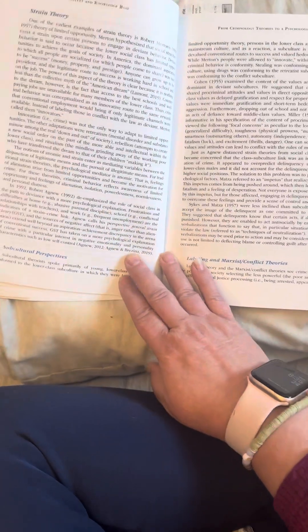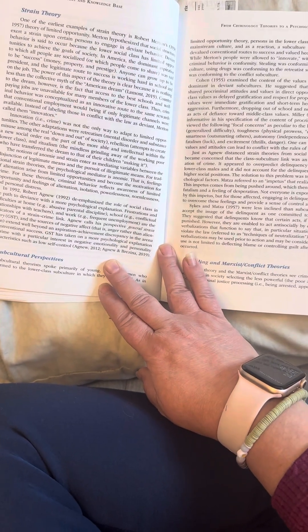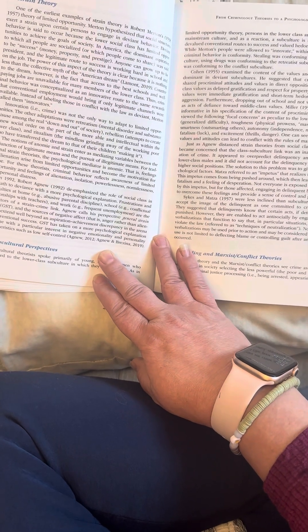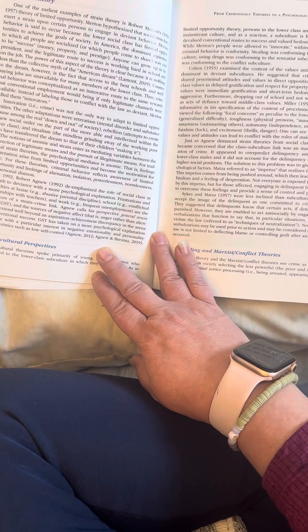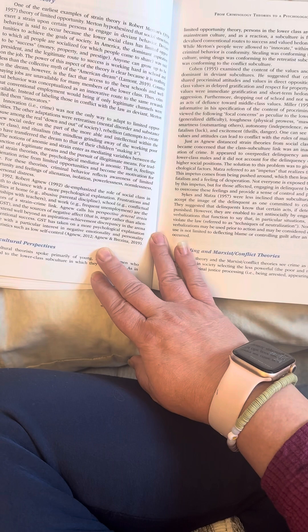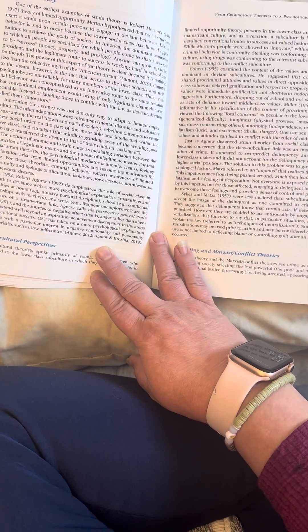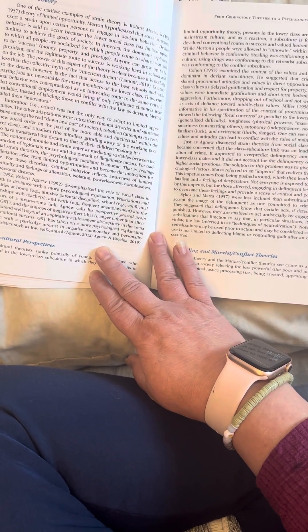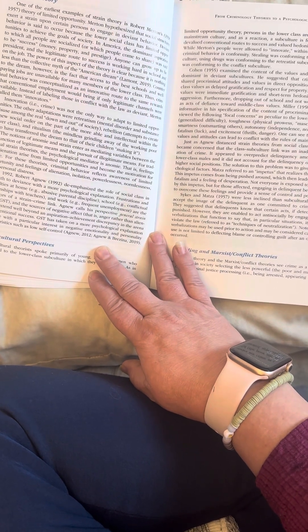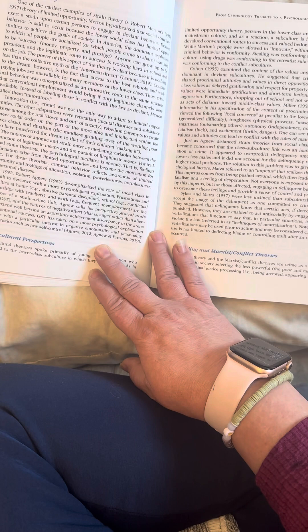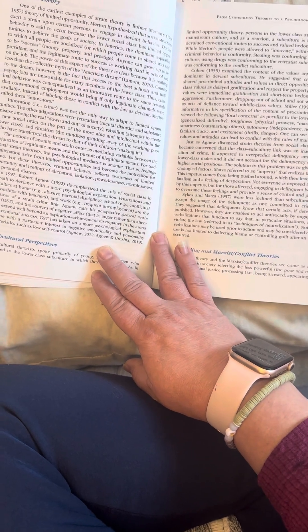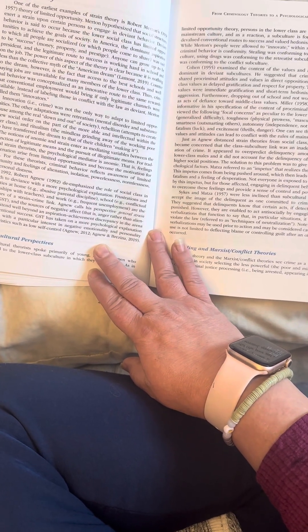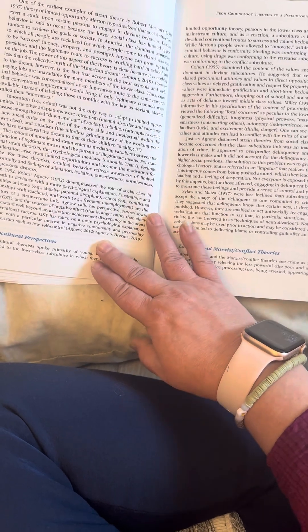The notions of anomie and strain enter as mediating variables between the disjunction of legitimate means and the pursuit of illegitimate means. For traditional strain theorists, the psychological mediator is anomie, that is, feelings of alienation arise from limited opportunities and become the motivation for crime. For these theorists, criminal behavior reflects awareness of limited opportunity and feelings of alienation, isolation, powerlessness, normlessness, and personal distress. In 1992, Robert Agnew, 1992, de-emphasized the role of social class in the path of deviance with a more psychological explanation, frustrations and difficulties at home.